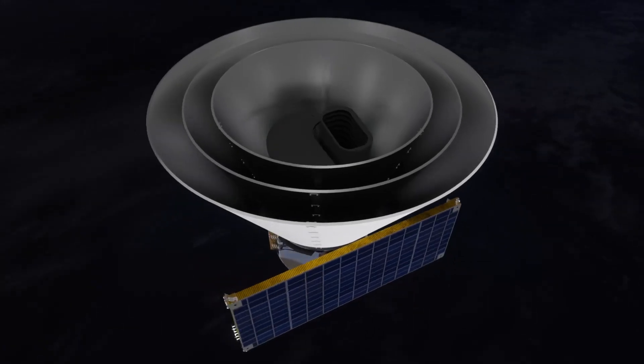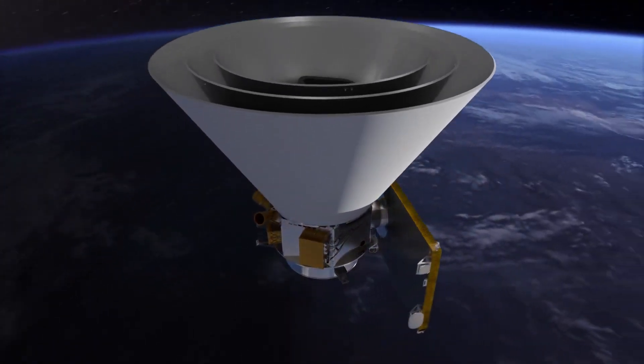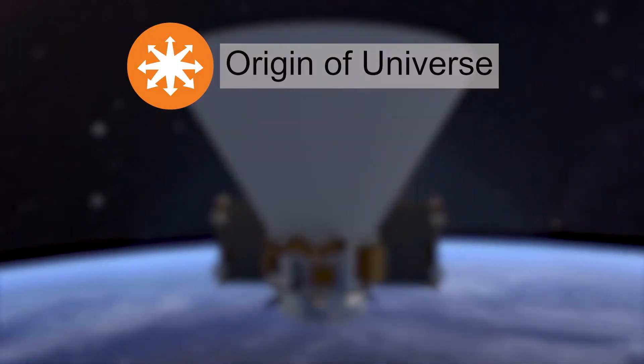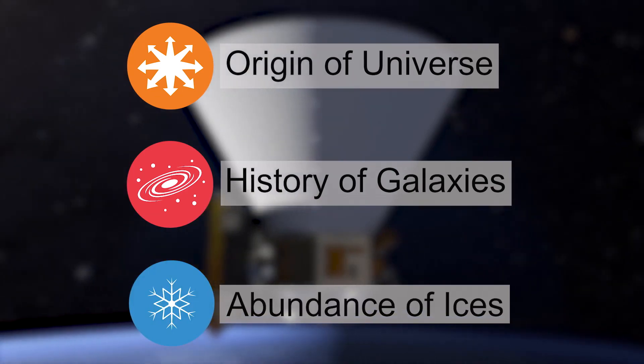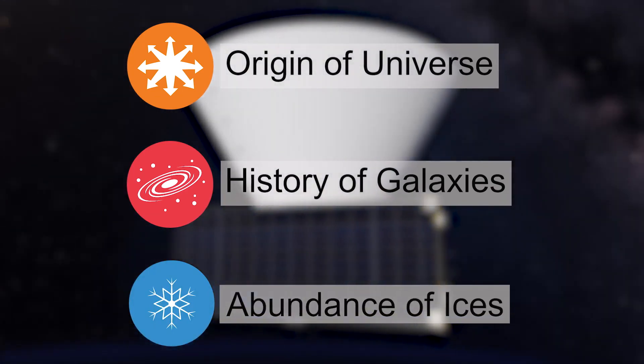We are going to survey the entire celestial sphere and collect a data set that will help us answer three fundamental science questions. It's going to tell us about the origin of the universe, the birth and formation history of galaxies, and the abundance of essential molecules such as water in the early stages of star and planet formation.